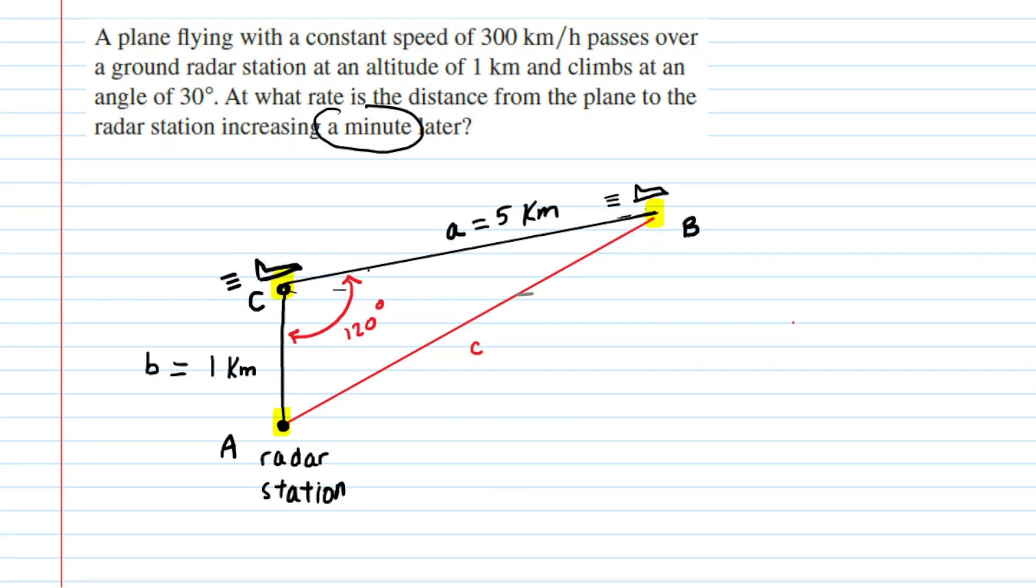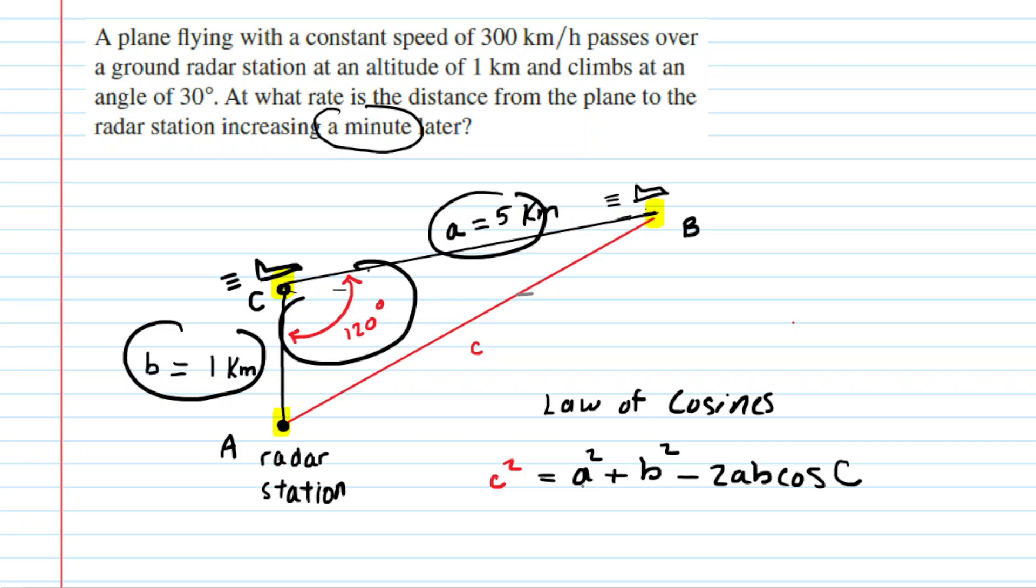The next thing we need to do is to find the length of c. And to do that, we're going to use the law of cosines. Now, you probably learned this equation in a pre-calculus course. We're going to go ahead and plug in all the values. Remember, we know a, we know b, and we know the angle C. So we'll plug them into the law of cosines.